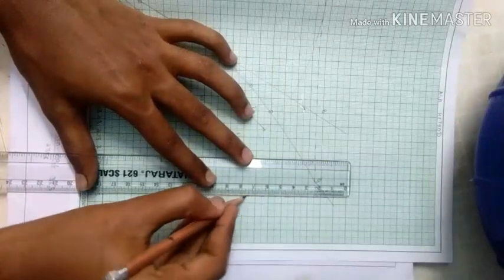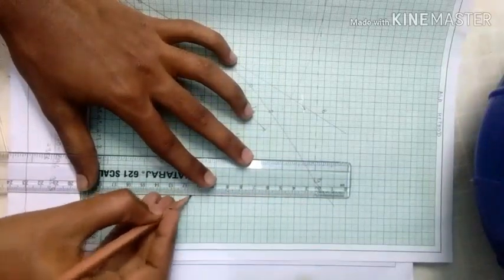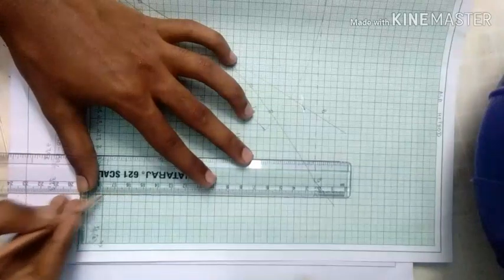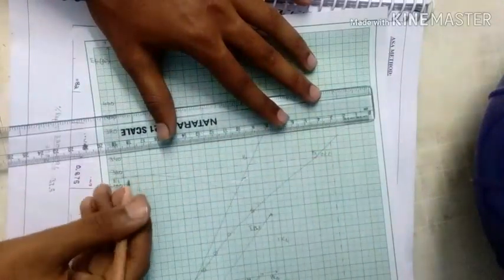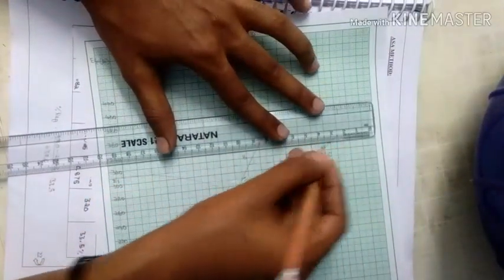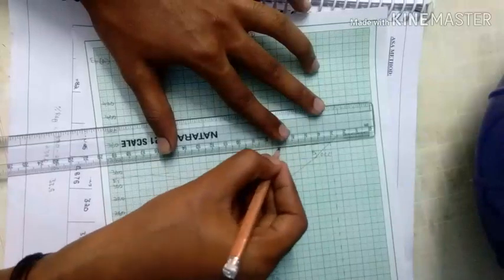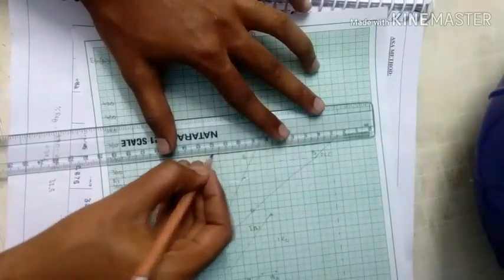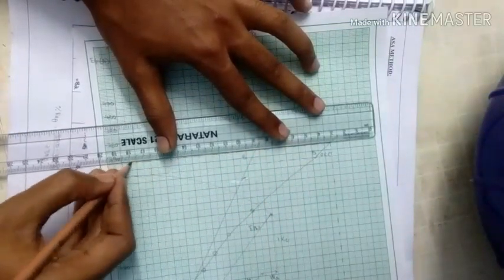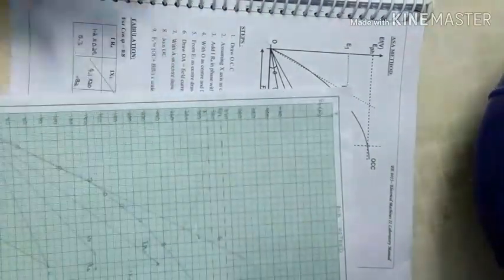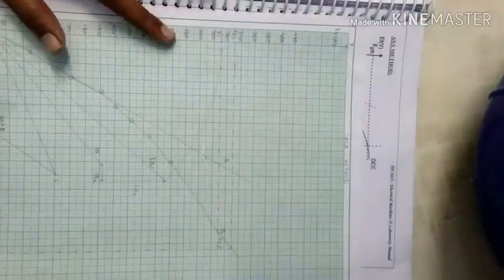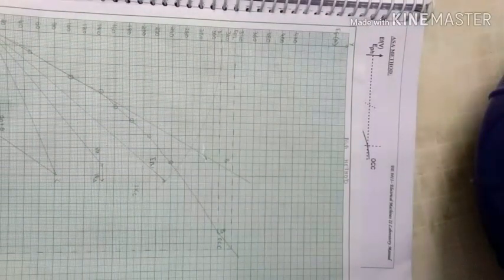So on the x-axis, take the point 3.9 and extend it upwards to cut the OCC curve. Then where it cuts the OCC curve, just project it towards the y-axis, so it cuts the y-axis. This line will be parallel to the x-axis.